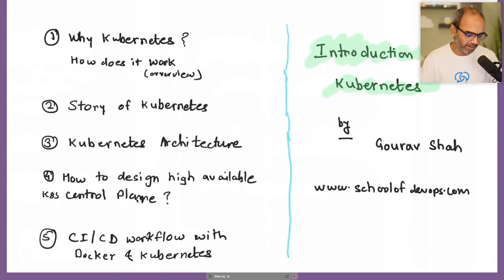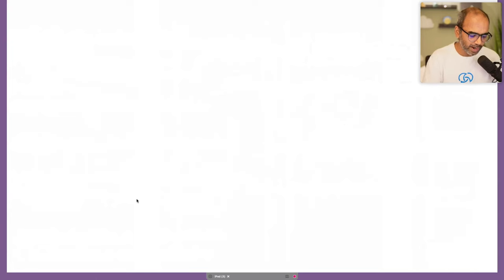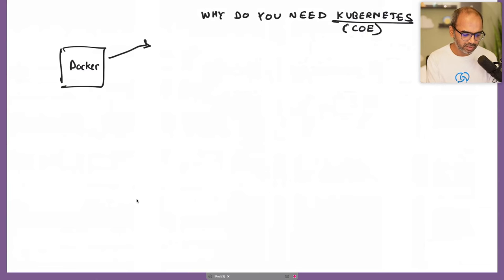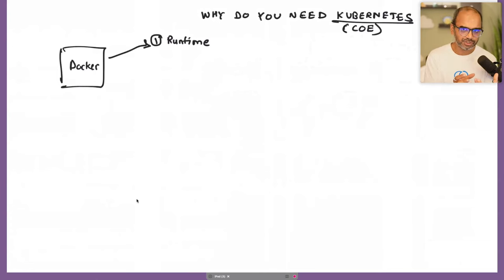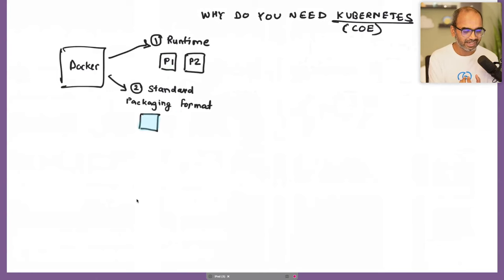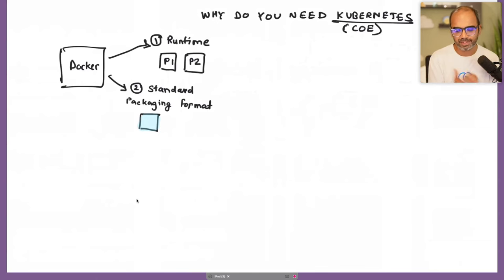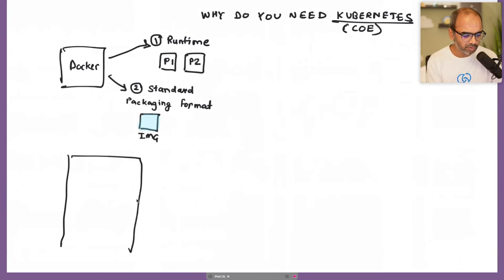Let's get started with today's topic: Kubernetes — why do we need it? Why not just use Docker? Docker gives us a couple of things: a way to run your application in a contained, isolated environment, and a standard packaging format. You take your application, take the runtime, package them together, and ship it anywhere — it runs the same way on your laptop, data center, or cloud.